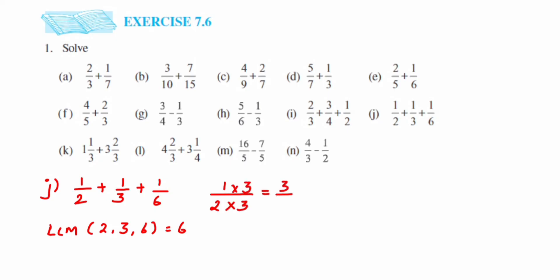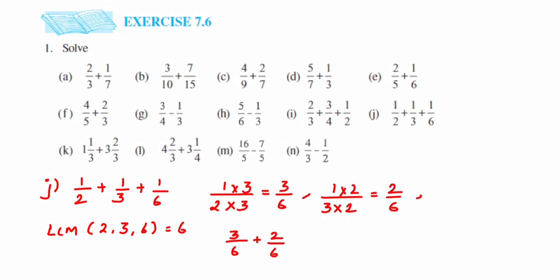For 1 upon 2, multiply by 3 to get 6 in the denominator, giving 3 by 6. For 1 upon 3, multiply by 2 to get 6, giving 2 by 6. The last number, 1 by 6, already has 6 in the denominator so we take it directly. Adding: 3 by 6 plus 2 by 6 plus 1 by 6. Adding the numerators: 3 plus 2 plus 1 is 6. So 6 upon 6 — we can cancel to get 1, which is a whole number.